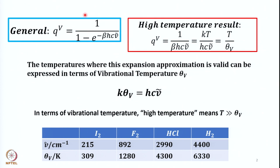Another general trend in the table: looking at molecular weights, iodine is a heavy molecule, then fluorine is lighter, then HCl, and then hydrogen — a very light molecule. You can correlate with the vibrational wave numbers: as the molecule becomes lighter, the wave number increases. If the wave number increases, more energy is required for vibrational modes to be active, so you also need higher temperature. Thus molecular weight and bond length correlate with wave number and characteristic vibrational temperature.